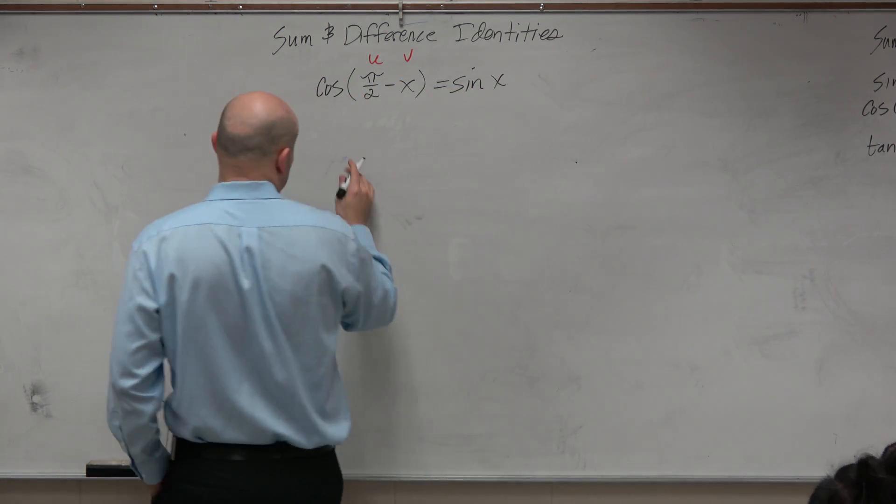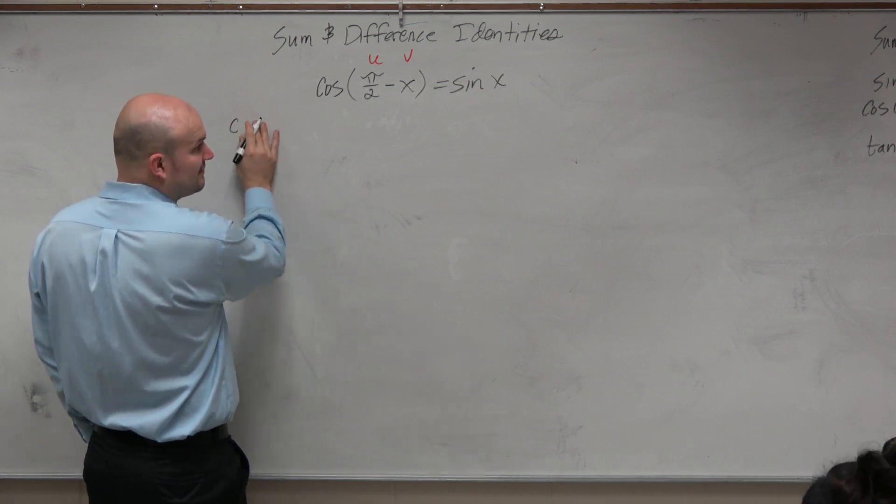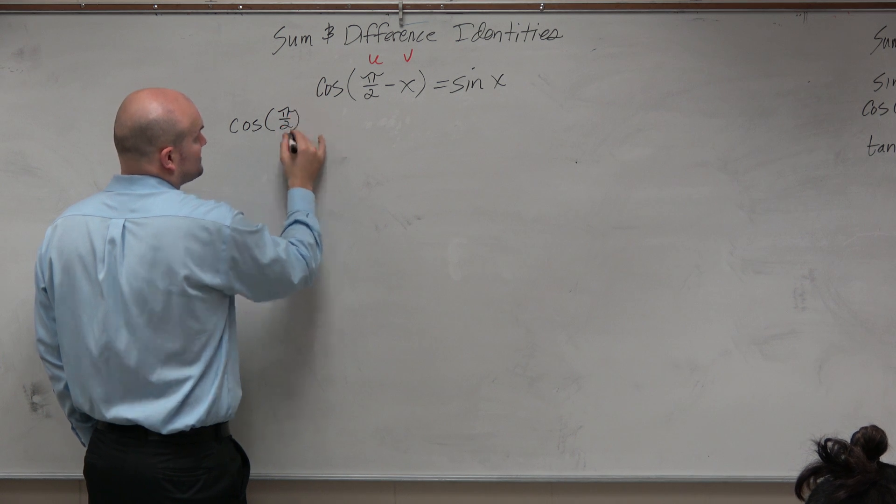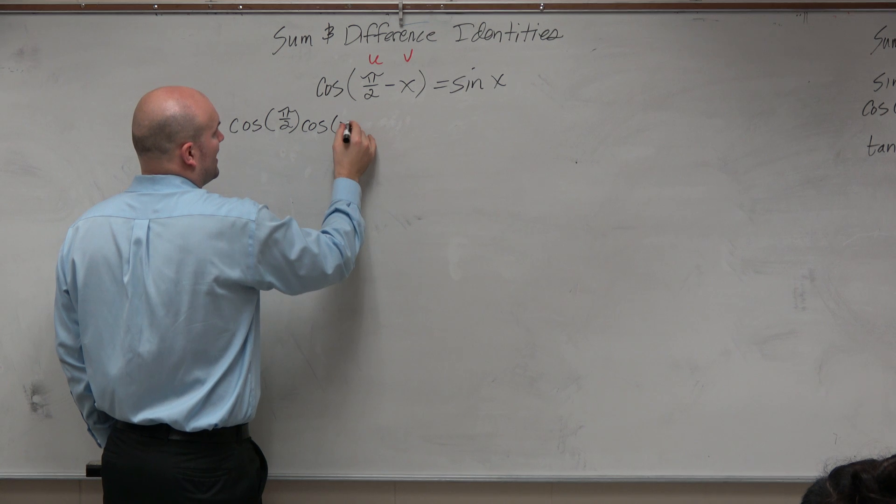And then we can basically just by looking at the formula here, we can say that the difference is going to be the cosine of pi halves, which is our u, times the cosine of x. Now again, please make sure you understand this is u minus v.